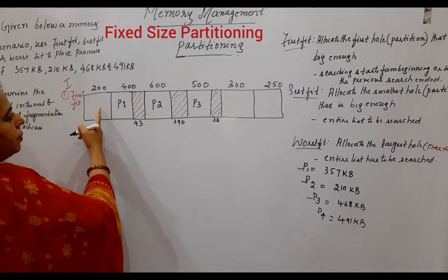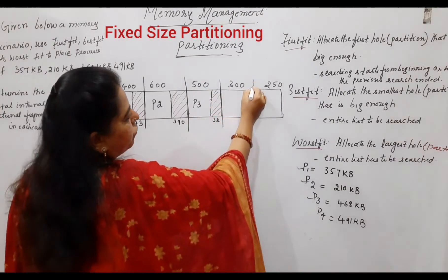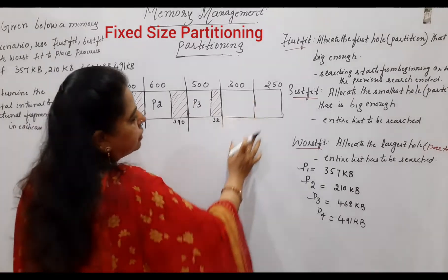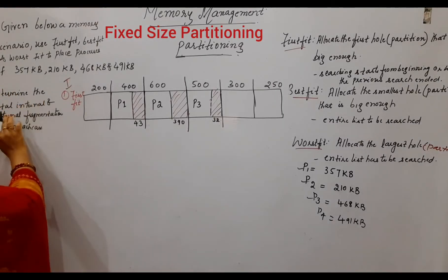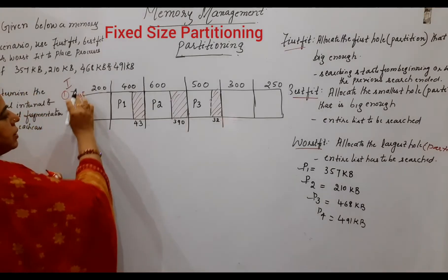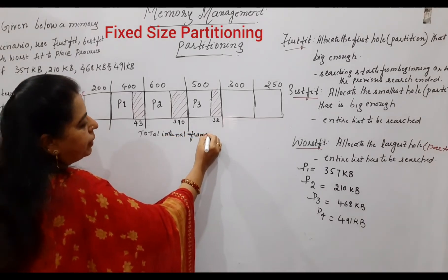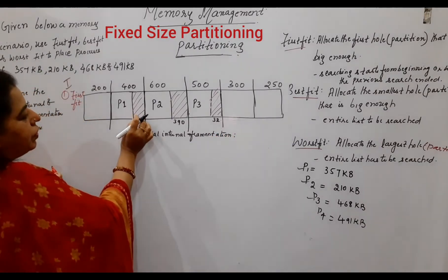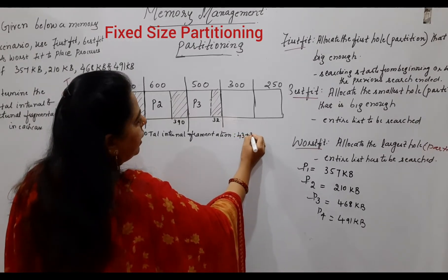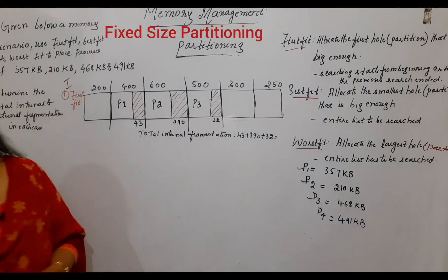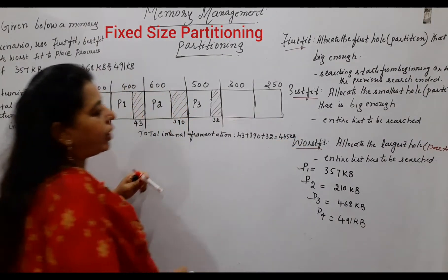What about P4 at 491 KB? Looking at the remaining partitions — this is the first, second, third, fourth, and fifth — there are three vacant partitions but none can accommodate 491 KB. So P4 cannot be placed. The total internal fragmentation for first fit is 43 plus 390 plus 32 equals 465 KB. Internal fragmentation is the leftover space that is internal to each occupied partition.